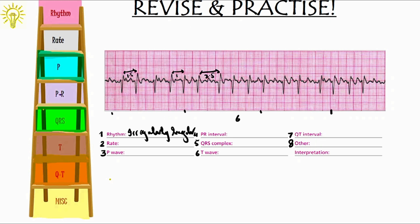So, this makes a 6 second strip of 30 large boxes. And in these, we have how many R waves? 1, 2, 3, 4, 5, 6, 7, 8, 9, 10, 11, 12, 13, 14. So, times 10 method, it turns out 14 into 10, 140 beats per minute.